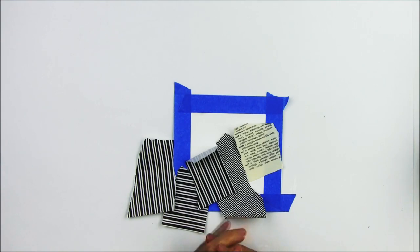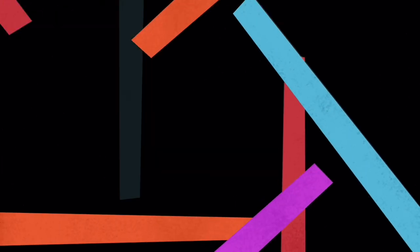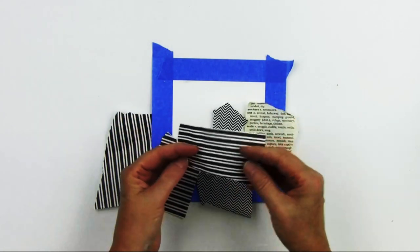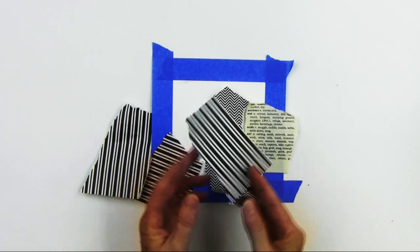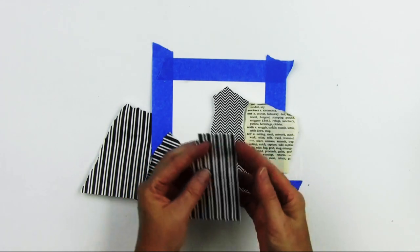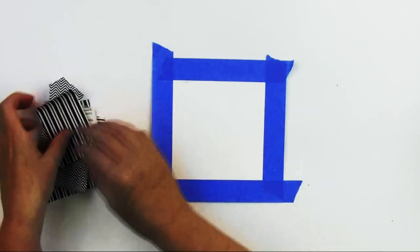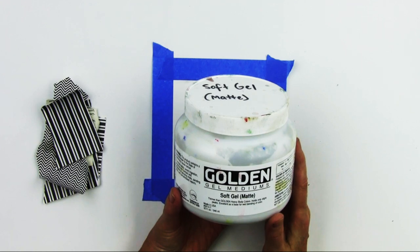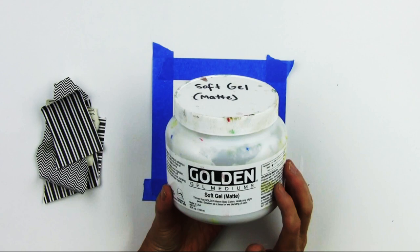In this lesson working on paper, I'm going to start by doing some collage elements in the background. I have some text here from a dictionary and some origami paper. I like using black and white rather than adding a lot of color, and then leaving the color for the actual pigmented wax. I'm first going to apply down some of these collage elements. We're going to use soft gel mat to glue this down, not gloss, so that there is good adhesion and the cold wax medium doesn't repel from a glossy surface.